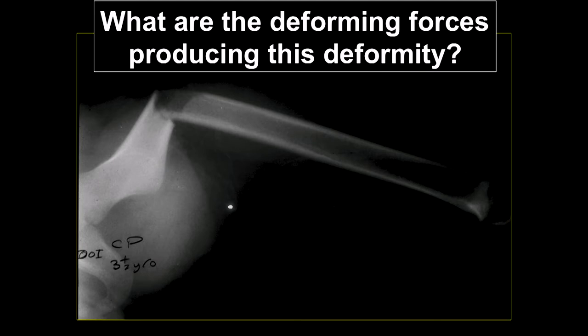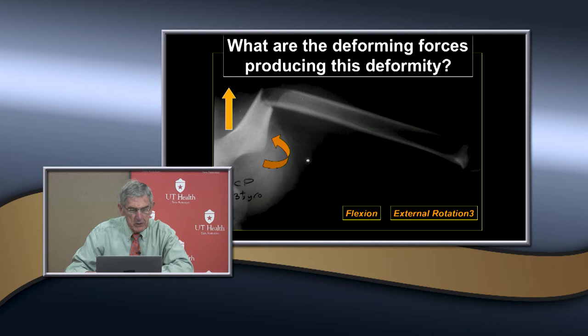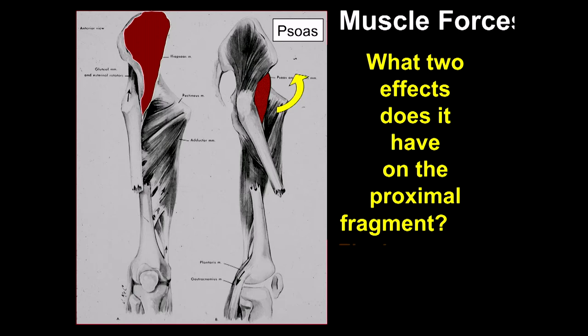Here we have a fracture with a deformity. What are the deforming forces producing this deformity? You have flexion and external rotation. Why? Because of the psoas muscle, which is now unopposed. When you have a fracture, you lose the extension mechanism, so everything acts on the proximal fragment. We call this the king fragment because nonoperatively there's really no way to change or control it. The psoas—the primary one—affects the proximal fragment and produces flexion and external rotation.